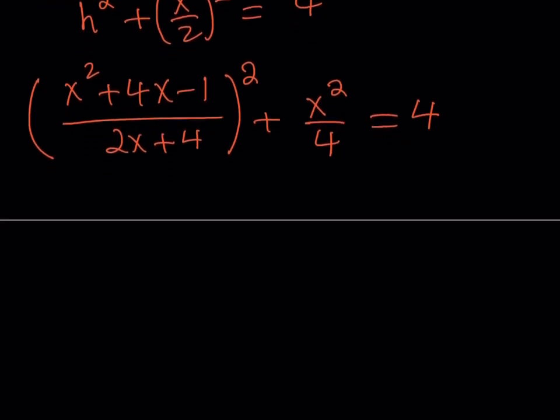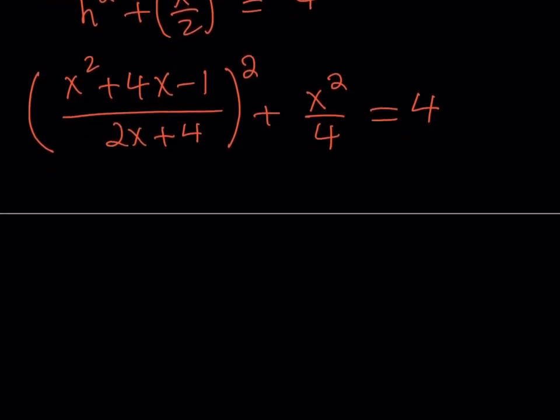Now, what do we do from here? Well, we're going to square the x squared plus 4x minus 1 and then divide it by 2x plus 4 quantity squared and then add this, make a common denominator, all that stuff. So, would you allow me to spare you all this trouble and give you the resultant quartic? I'm pretty sure you would do that. So with your permission, I'm going to go ahead and spare you the trouble and give you the equation.